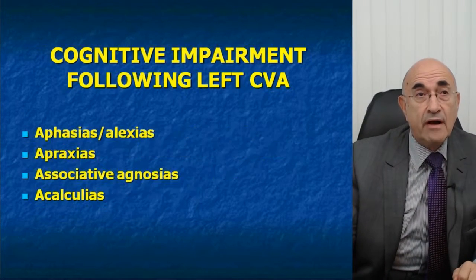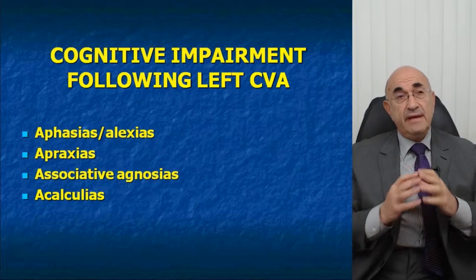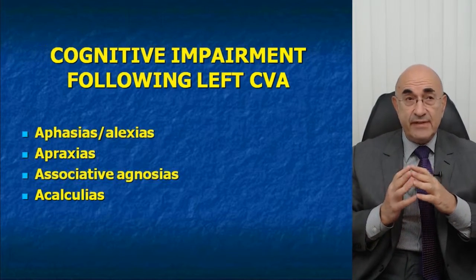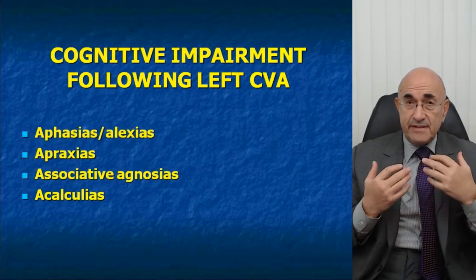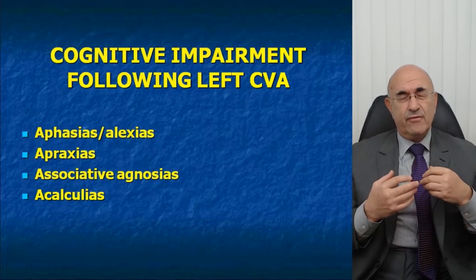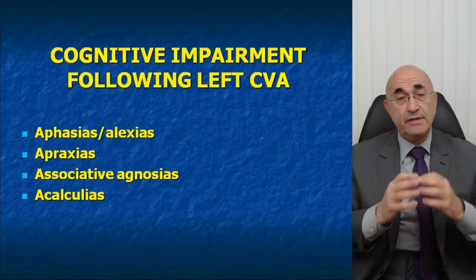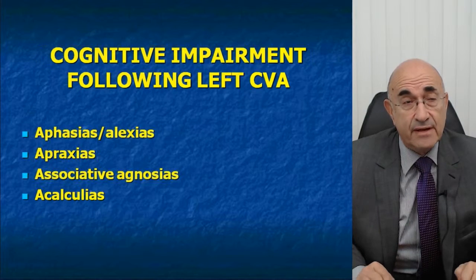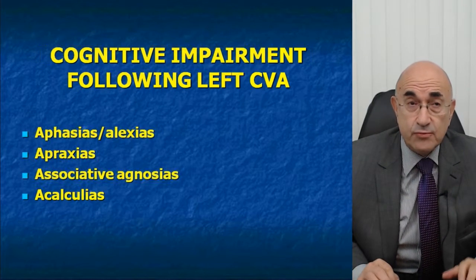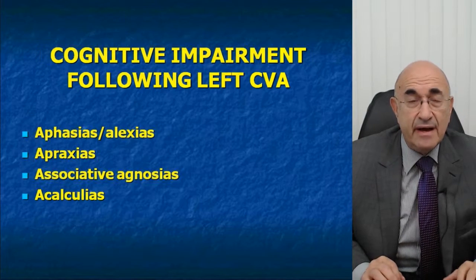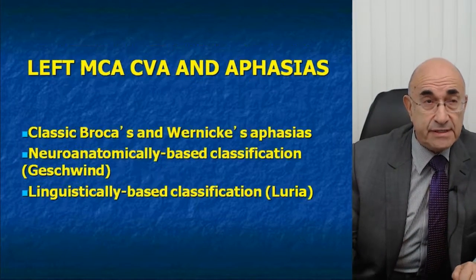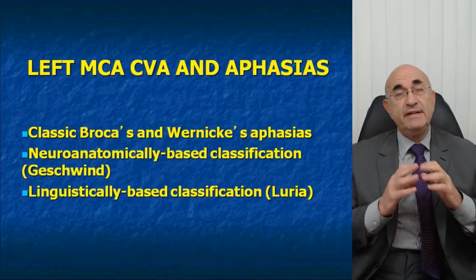What are the cognitive difficulties? In the right-handed individual following a left cerebrovascular accident, there may be a variety of events: aphasia — a deficit of spoken language — and alexia, a deficit of written language. There may be apraxias, certain agnosias such as associative agnosias which we talked about last week, and acalculias. Let's talk about each of them separately.